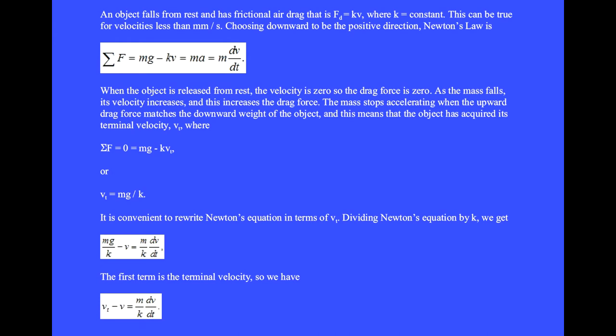Let's write f equals ma for the case of an object that falls from rest and has frictional air drag that is k times v, where k equals constant. This can be true for velocities less than millimeters per second. Choosing downward to be the positive direction,